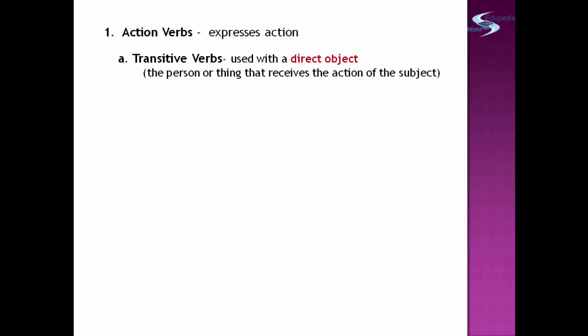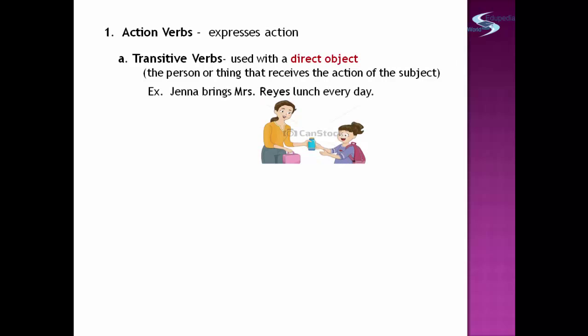We have the types of verbs. The first type is action verbs — words that express action. These are further subdivided into: A) transitive verbs, which are verbs used with a direct object. A direct object is the person or thing that receives the action of the subject. For example: 'Gina brings Mrs. Reyes' lamps every day.' Which word in this example is the direct object?